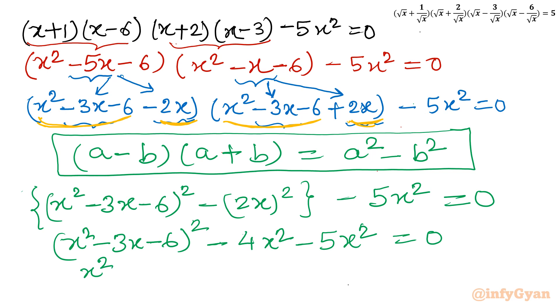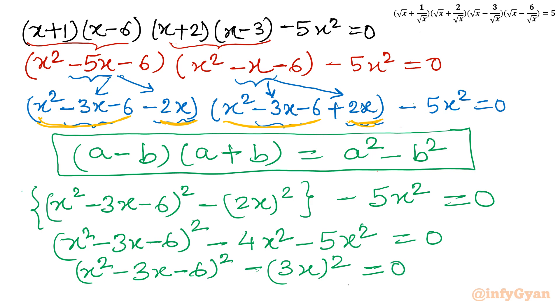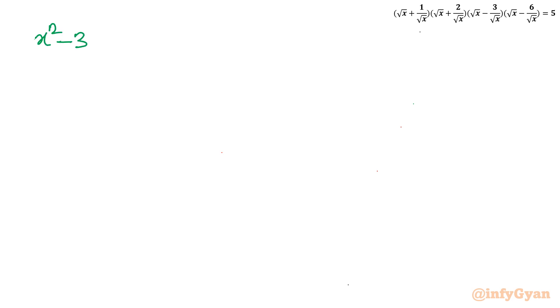Now you can see that difference of two squares is about to appear again — and that is the beautiful part of this solution. Combining -4x² - 5x² = -9x², which can be written as -(3x)². So I now have (x² - 3x - 6)² - (3x)² = 0.